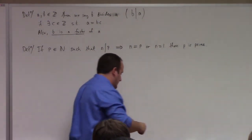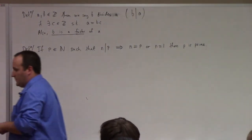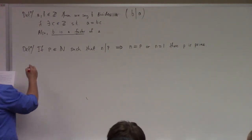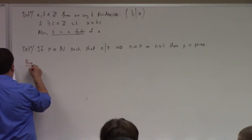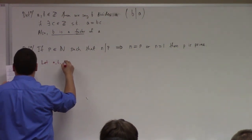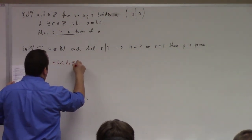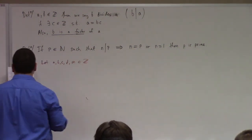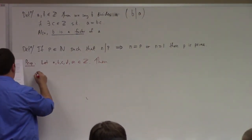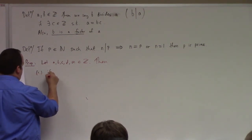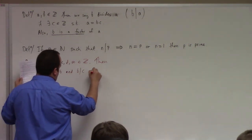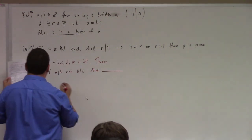Hopefully this is a review — you should have seen these things in some course before. Proposition: let a, b, c, d, and m be integers. Then we have a few things. Point one: if a divides b and b divides c, then — I'll let you fill in the blank. Two: if a divides b and c divides d, then — fill in the blank.